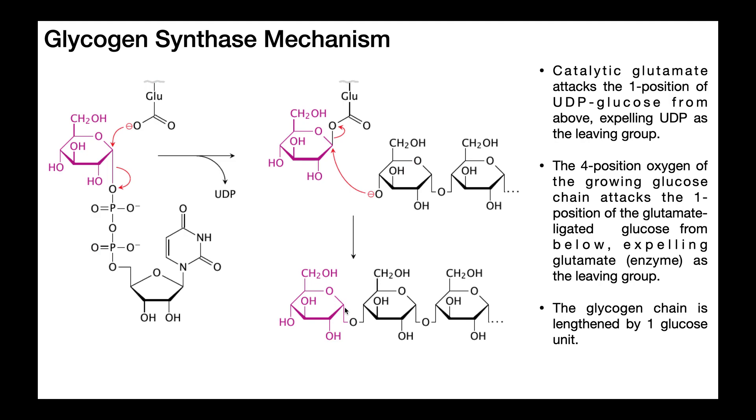And so because it's in the alpha conformation and links the one position, or the anomeric carbon, to the four position of the previous glucose, it's termed an alpha 1 to 4 linkage. So hopefully this video gives you a good understanding of the glycogen synthase mechanism, and also why glycogen has so many alpha 1 to 4 linkages.